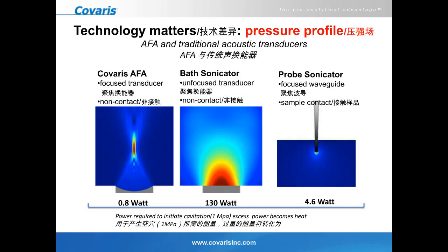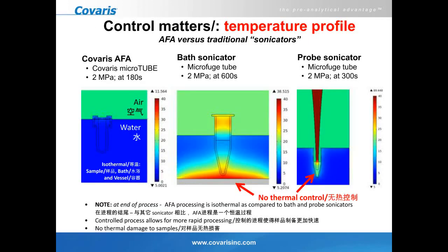Technology does matter. It takes about one megapascal of energy to initiate cavitation. Covarris AFA requires only about 0.8 watts to initiate cavitation. A bath sonicator, which is an unfocused transducer, requires about 130 watts because most of that energy is wasted as heat. Probe sonicators require only about 5 watts to initiate cavitation, but when we look at the temperature profiles, you can see the major differences between these technologies.